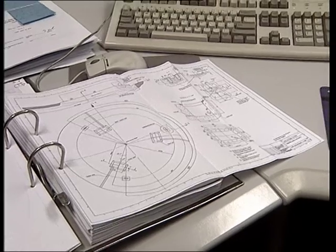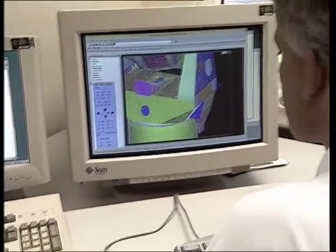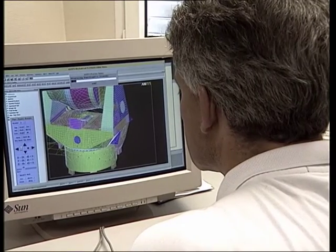In North America, Vertex RSI was selected by AUI for construction of a prototype antenna, while ESO chose a consortium of European Industrial Engineering of Italy and Alcatel Space of France for the production of another prototype.